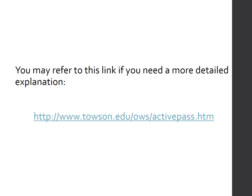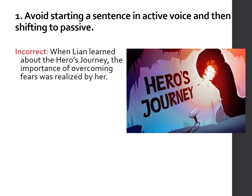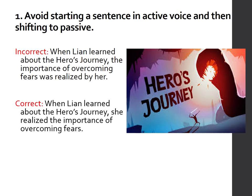If you need more practice or a more detailed explanation, refer to the link provided. Now we come to the second part: things to watch out for. First, avoid starting a sentence in active voice and then suddenly shifting to passive — that's inconsistent, unnecessary shifting. For example: 'When Lian learned about the hero's journey, the importance of overcoming fears was realized by her.' In the first clause, Lian is the doer, but in the main clause she suddenly becomes a passive receiver. The correct version keeps it active throughout: 'When Lian learned about the hero's journey, she realized the importance of overcoming fears.'